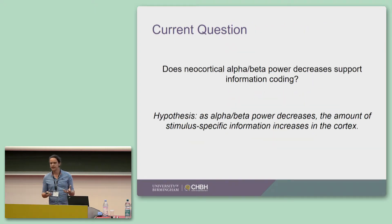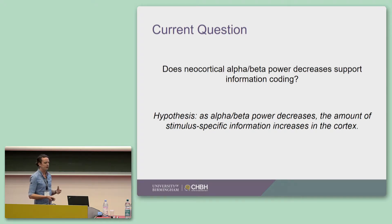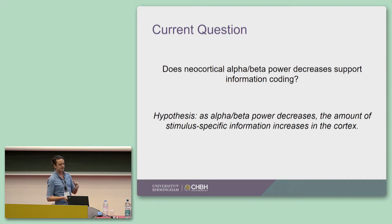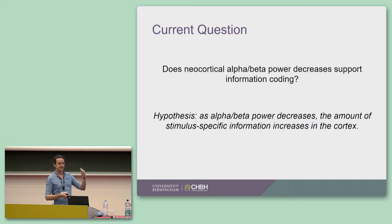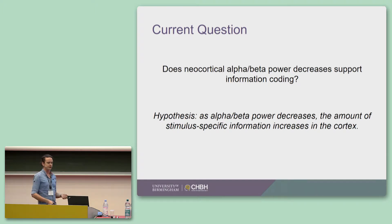So we investigated the idea that perhaps desynchronized neural oscillations are beneficial for information processing by essentially reducing the background noise in the brain and helping that stimulus signal be presented. We had some participants come in and take part in a simultaneous EEG-fMRI experiment, and we wanted to test the hypothesis that decreases in alpha or beta power — the amplitude of this oscillation — might reflect an increase in the amount of information you can represent within the neocortex.